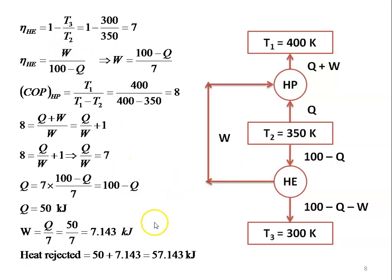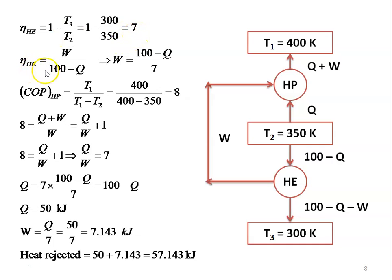For the heat engine, efficiency = 1 − T3/T2 = 1 − 300/350 = 1/7. Also, efficiency = W/(100 − Q), so W = (100 − Q)/7.